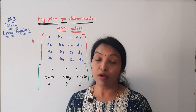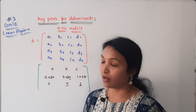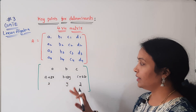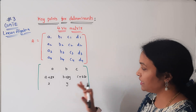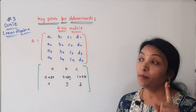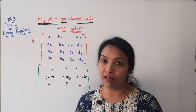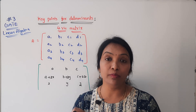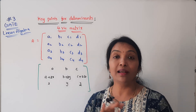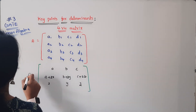We are already discussing 3x3. The key point is: if two rows are identical or equal, or two columns are equal, then automatically the determinant of the matrix is equal to 0. If rows and columns are equal, the determinant equals 0.